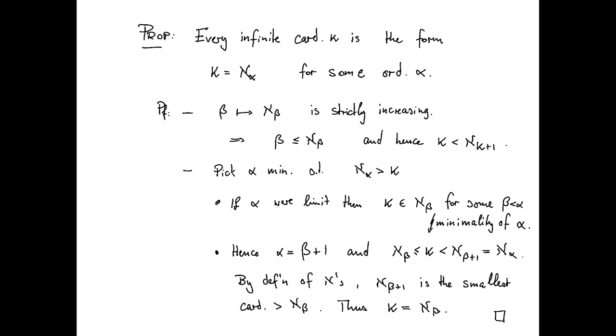Here's a basic outline of the proof. So first, you would observe that this mapping, if you map an ordinal beta to aleph beta, that's a strictly increasing map. So this map here is strictly increasing.